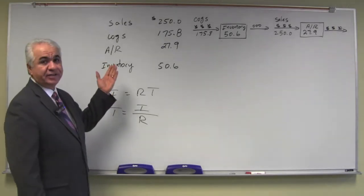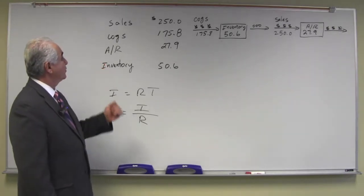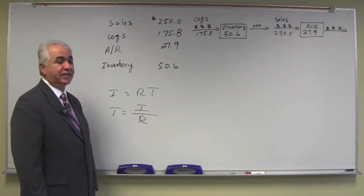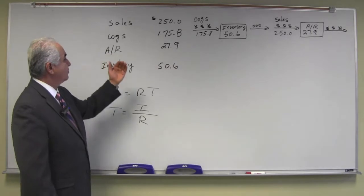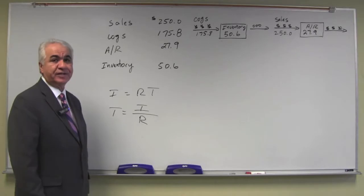We have the financial data on a company. The sales are $250 million a year. Cost of goods sold is $175.8 million. Account receivable is $27.9 million. And inventory is $50.6 million.